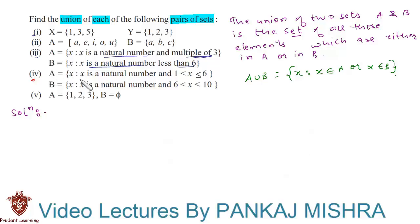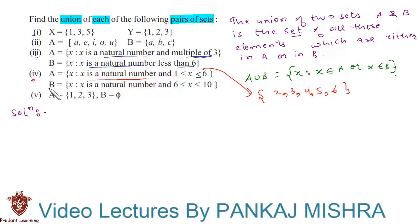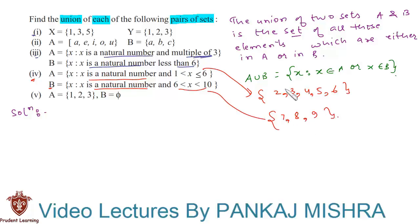In the fourth section, A is equal to the set of X such that X is a natural number and 1 < X ≤ 6, so the elements of this set are {2, 3, 4, 5, 6}. B is equal to the set of X such that X is a natural number and X lies between 6 and 10, so the elements of this set are {7, 8, 9}. Clubbing the elements of both sets gives A union B is equal to {2, 3, 4, 5, 6, 7, 8, 9}.